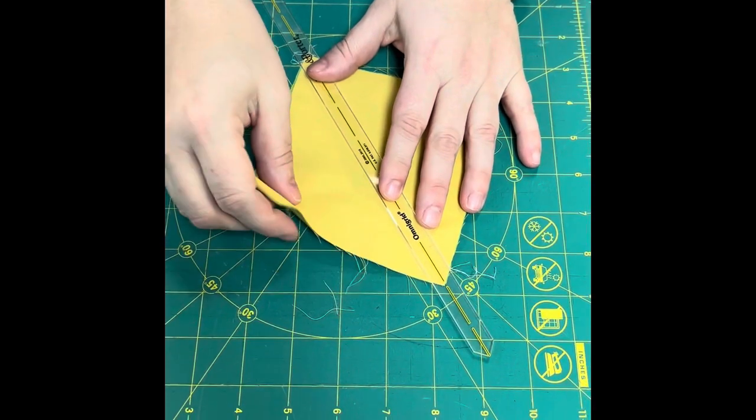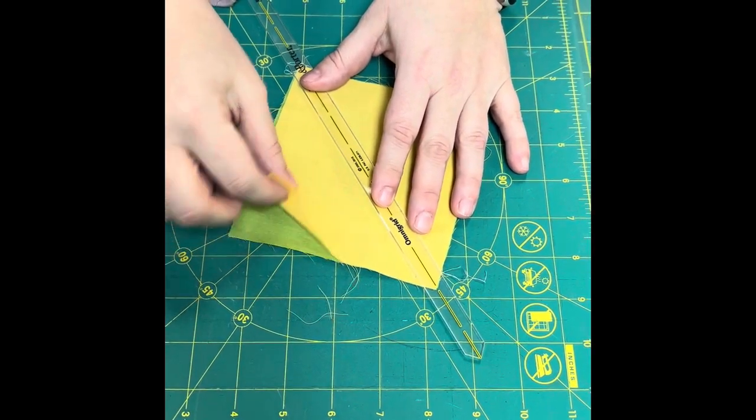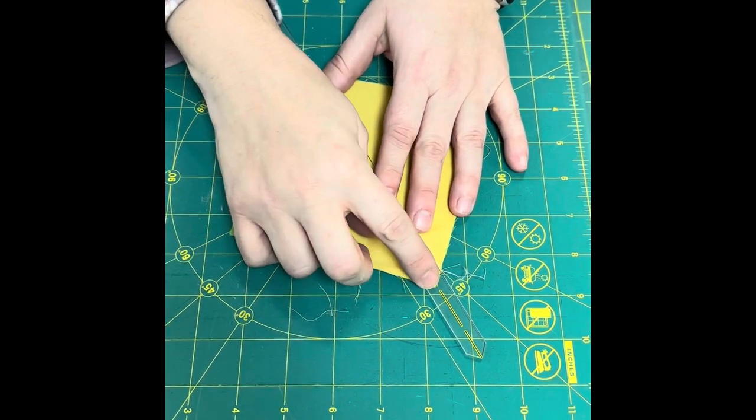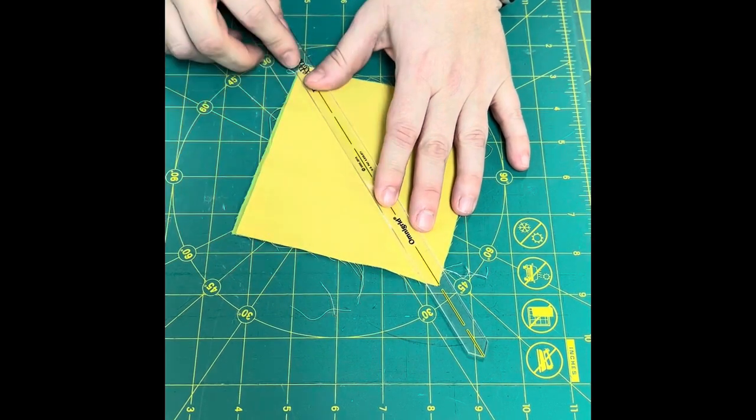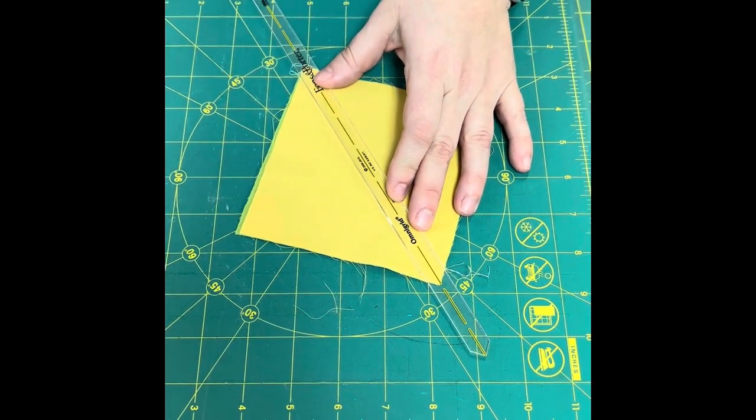I place my blocks right side together and with the solid it's difficult because there is no right side. But you place your fabrics right side together one on top of each other. Then point to point on this quarter inch ruler and I like the 12 inch quarter inch ruler just because I can use pretty much any size block.